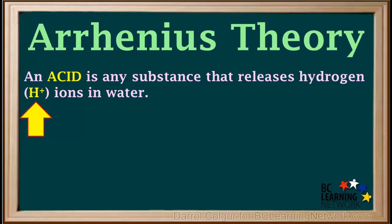In 1887, a Swedish chemist, Svante August Arrhenius, proposed that an acid is any substance that releases hydrogen or H+ ions in water.